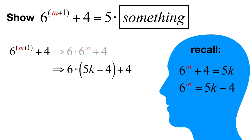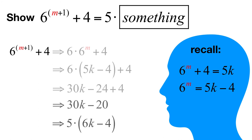Then we'll distribute the six and we get 30K minus 24 plus four, which is the same thing as 30K minus 20. Well, we have numbers that are multiples of five. So we remove a common factor of five showing that indeed, we can write six raised to the M plus one power plus four as five times something.